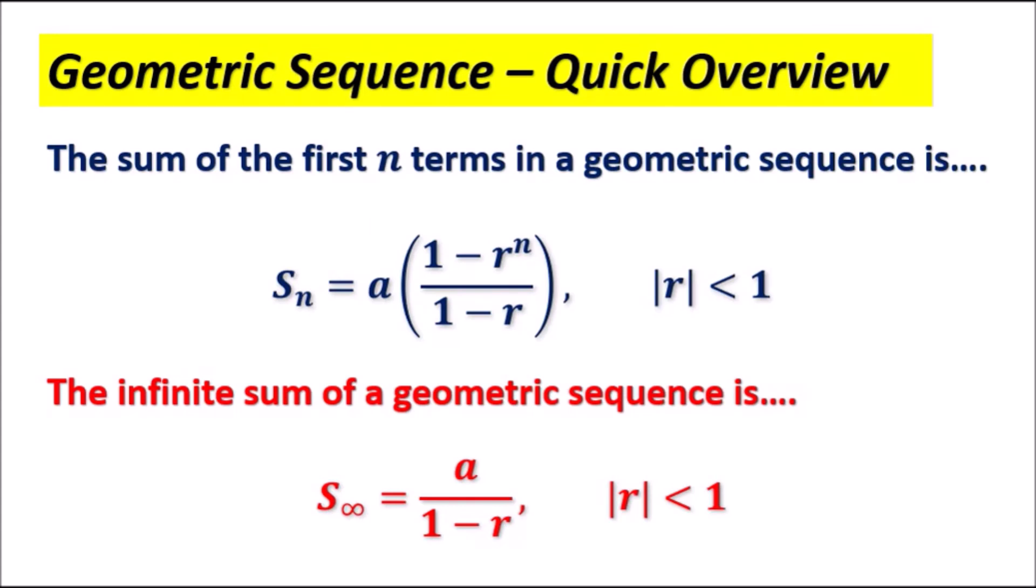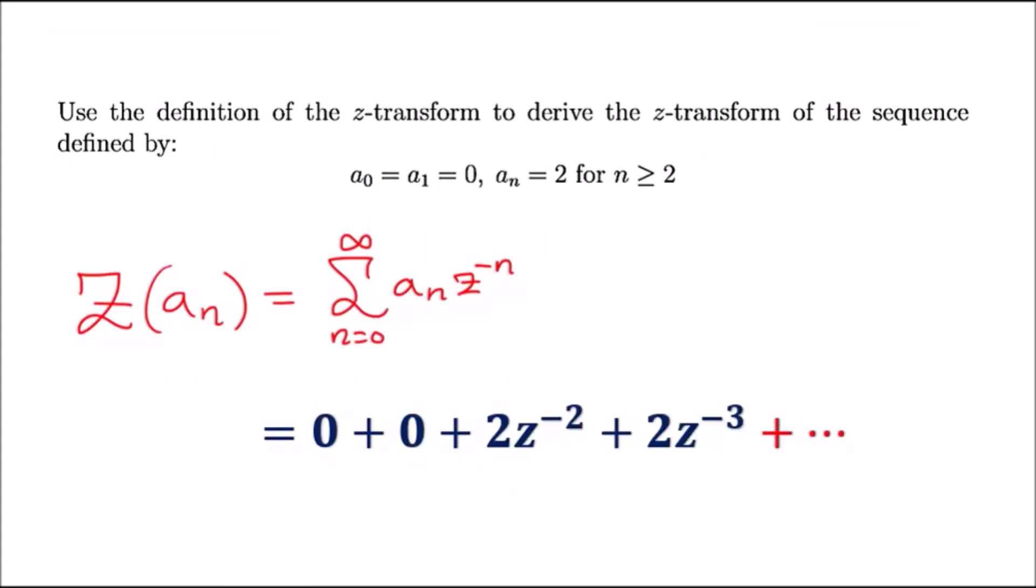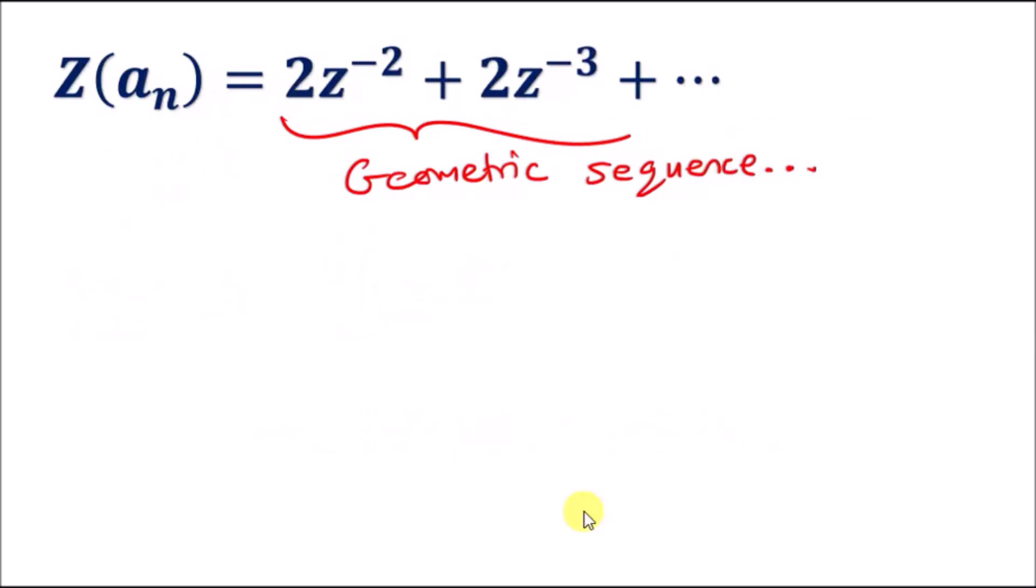Let's go back to our sequence. We can go ahead and cut this one short. Ignoring the zeros, it's going to be reduced to this. We can clearly see that the first term is 2z^(-2), so that is our a term.